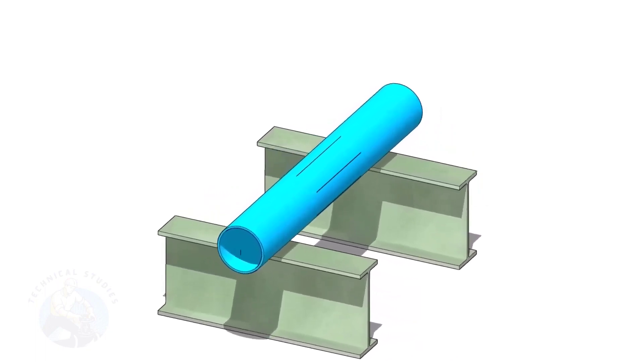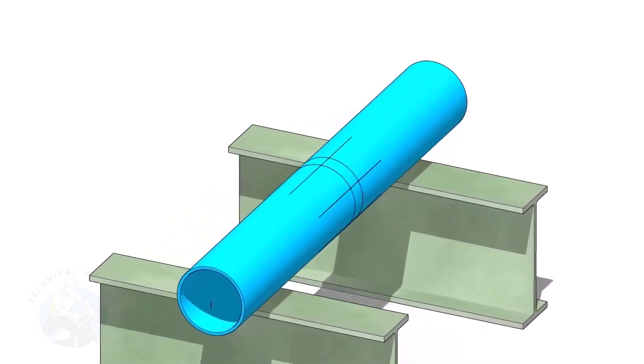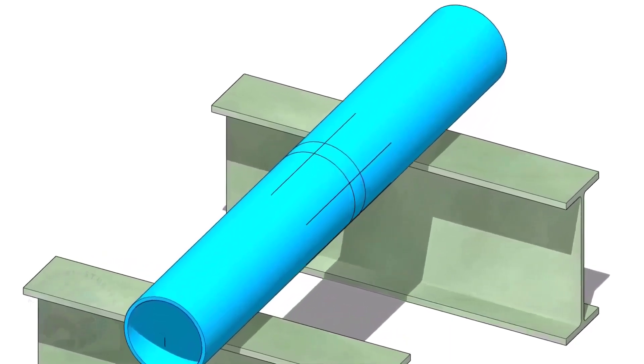Put a 6-inch pipe on supports. Divide the pipe into six equal parts and draw lines as shown.